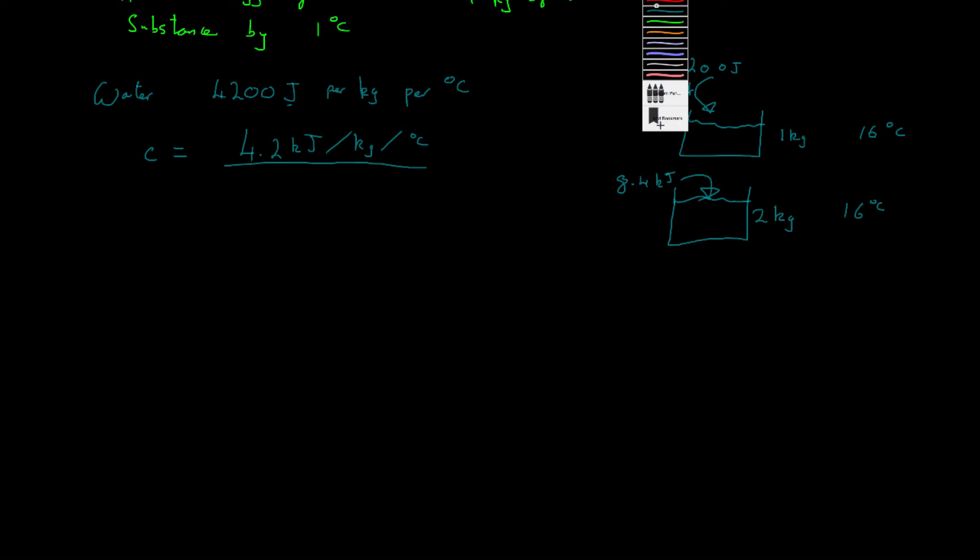Okay. All this can be summed up in an equation. So for any substance E which is our amount of energy we need to supply is equal to the mass of the substance we have times by our specific heat capacity. Okay. Which is labelled C times by theta. We just give it a label theta. But that is the change in temperature. Okay. So this is our energy. This here is the mass of our material. This here is the specific heat capacity. And theta is our temperature change.